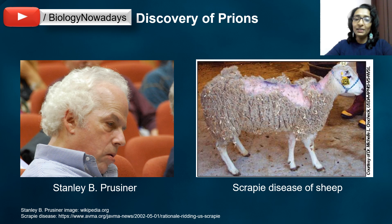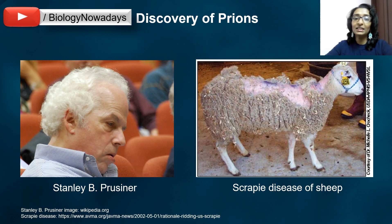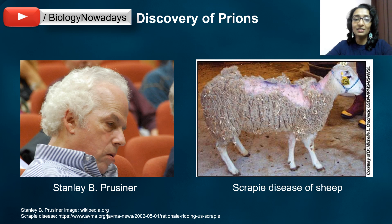Scrapie is a very serious degenerative disease affecting the nervous system of sheep and goats. The name Scrapie is derived from one of the clinical signs of the condition, wherein affected animals will compulsively scrape off their fleeces against rocks, trees or fences.